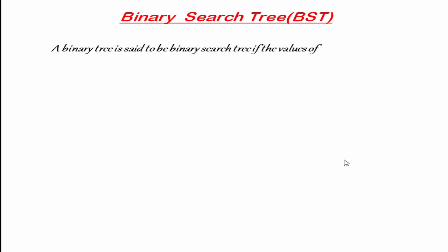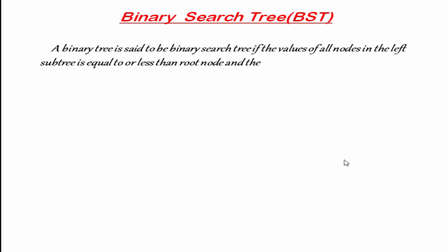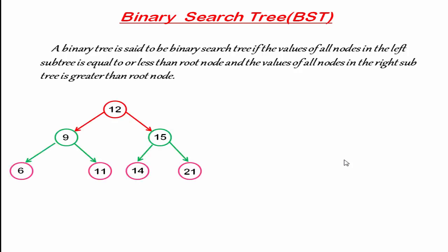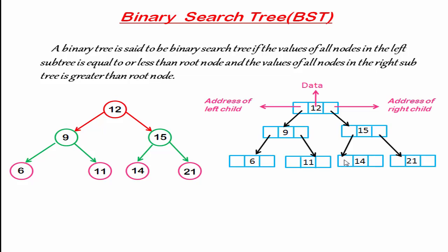As we know, a binary tree is said to be a binary search tree if the values of all the nodes of the left subtree are less than or equal to the root node, and the values of all the nodes in the right subtree are greater than the root node. This is a binary search tree. Now the question is: how to represent a binary search tree in computer memory? The most common and useful way is a linked list.